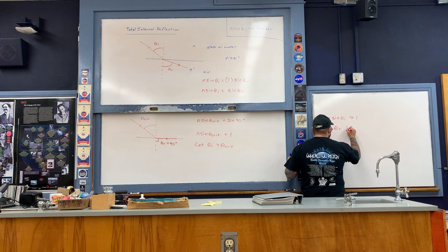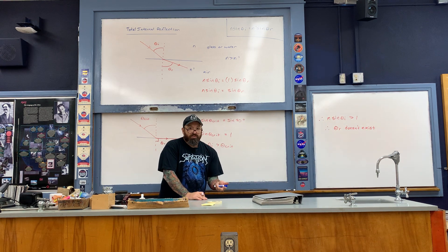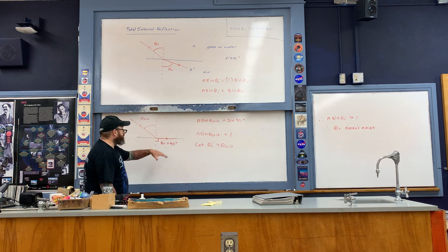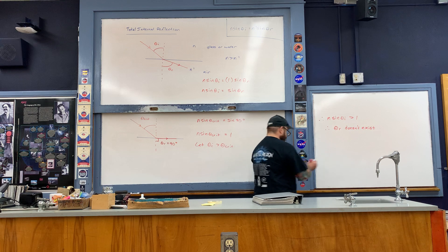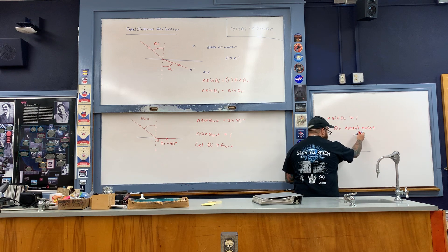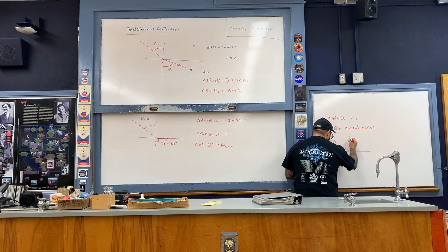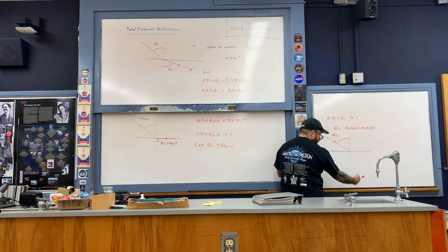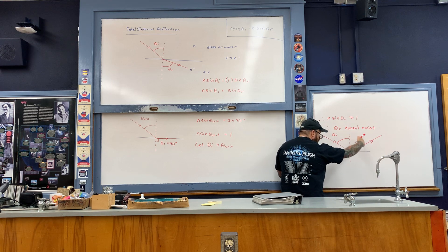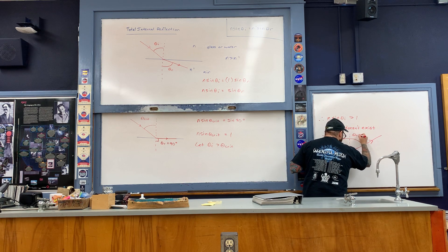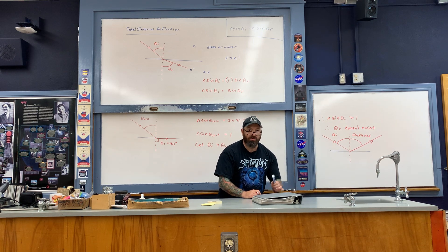Since the refracted angle doesn't exist, what happens to the light? It is totally internally reflected — it stays within the glass or water. Here is the boundary between the glass or water and the air. The incoming light ray has an angle of incidence greater than the critical angle, so no light refracts into the air. Instead, all of the light reflects at the boundary. The reflected angle is shown here, and all the light stays within that medium. We refer to this situation as total internal reflection.